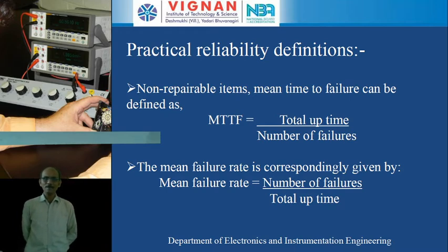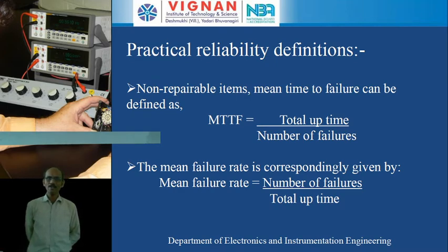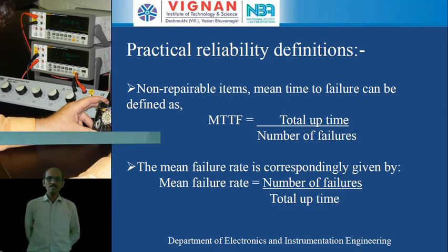For non-repairable items, coming to MTTF — mean time to failure — it is defined as the ratio of total uptime to number of failures. Total uptime is also called the survival time. For example, if a component or system works properly for three months, we take those three months as the total uptime or survival time, after which the component or system gets damaged. Mean failure rate is the ratio of number of failures to total uptime.